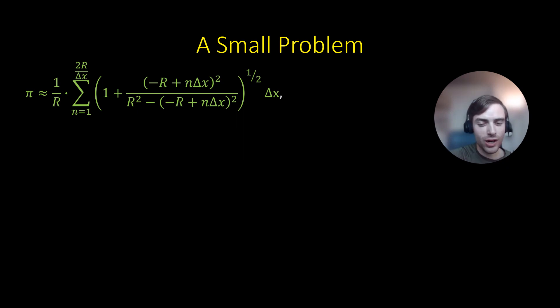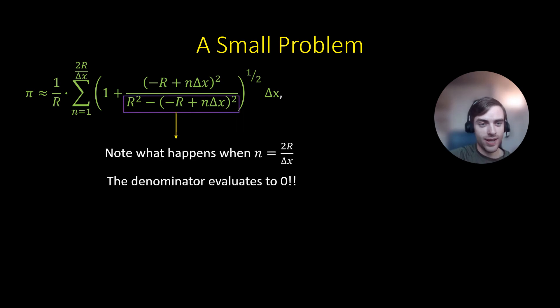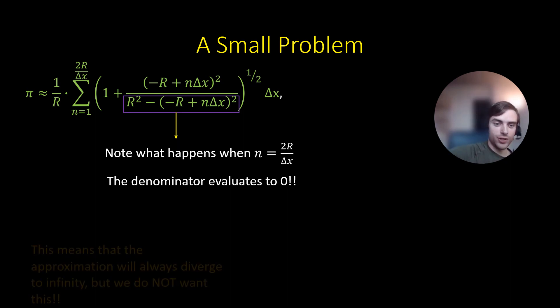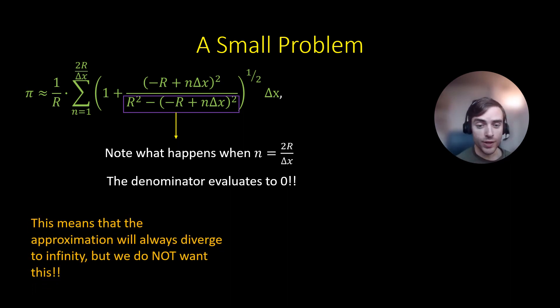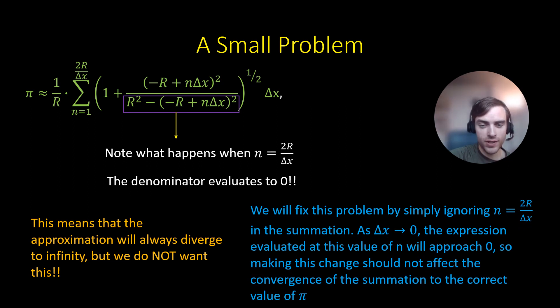However, there is a small problem in this formula over here. Can you spot it? This problem is that in the denominator, when n is at its last value of 2r over delta x, this denominator is equal to 0. And so this means that the approximation will always diverge to infinity. But we don't really want this to happen. So how do we solve it? Well, we fix this problem by simply ignoring n is equal to 2r over delta x in the summation.